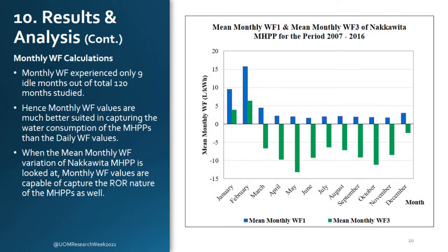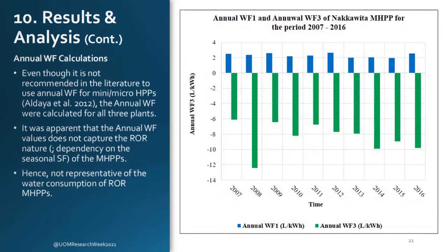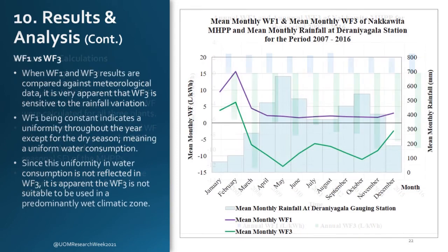When looking at the mean monthly water footprint, it captures the seasonal variations very well. Considering that there were only 9 idle months out of 120 months considered, it captures the water footprint to a satisfactory level. When annual water footprint values are considered, it is very apparent that they do not capture the seasonal variation or the ROR nature of the mini hydropower plants, so annual water footprint is not suitable for the assessment of ROR type hydropower plants at all.